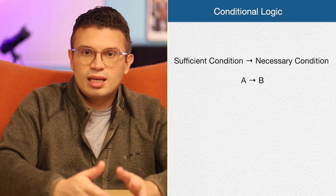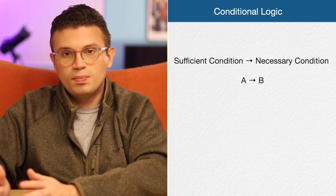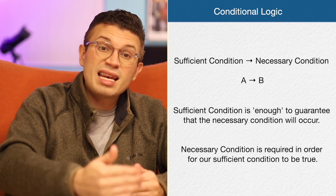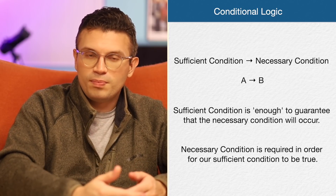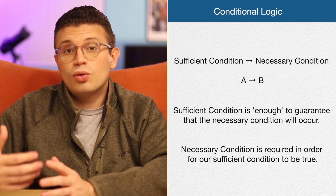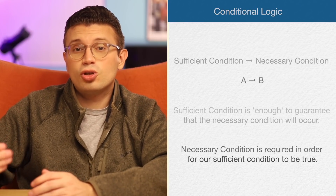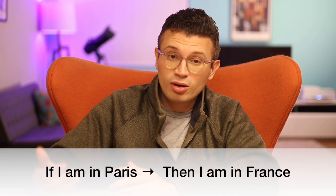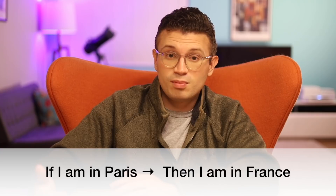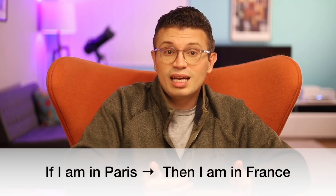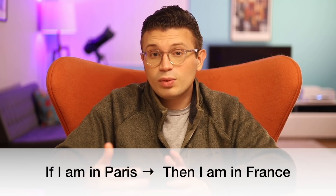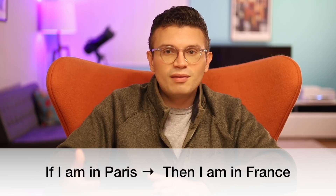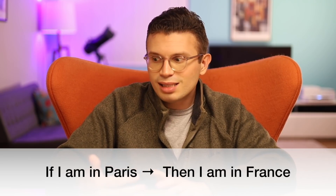The sufficient condition is enough to guarantee that the necessary condition will absolutely occur. The necessary condition is required in order for our sufficient condition to be true. For example: if I am in Paris, then I am in France. If you're in Paris, that's sufficient to guarantee that you're in France. And you can't be in Paris without also being in France, so being in France is a requirement — it's necessary to be in Paris.